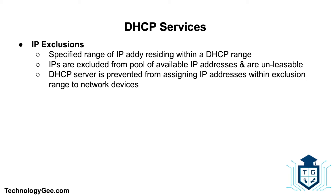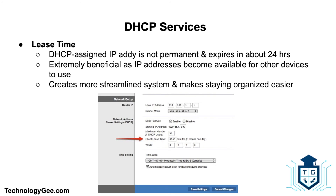A DHCP IP exclusion is a specified range of IP addresses residing within the DHCP range that are excluded from the pool of available IP addresses and are unleasable. The DHCP server is prevented from assigning IP addresses within the exclusion range to network devices.